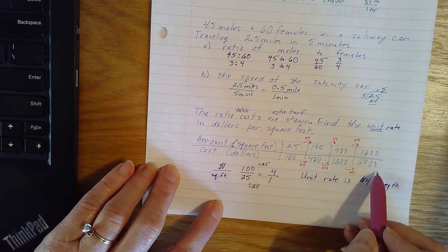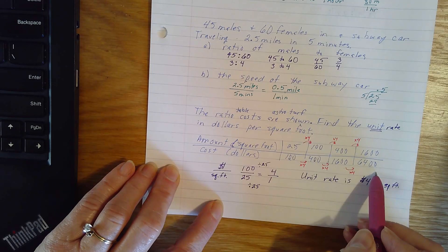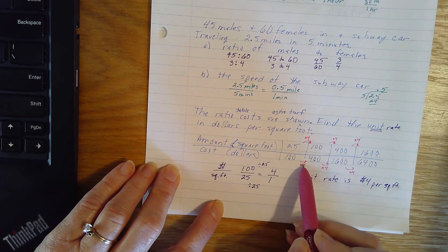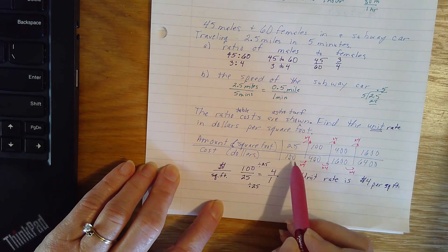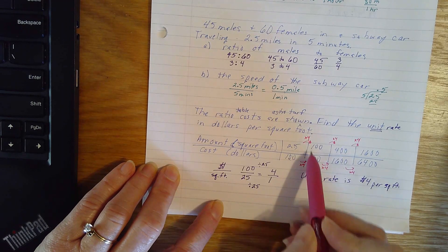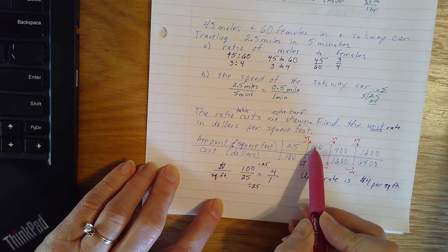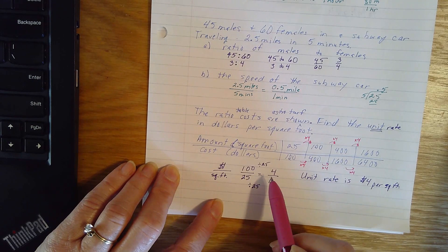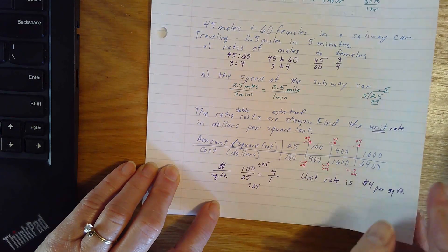So we could multiply it by 4. I could have chosen any number I wanted to. I have to simply be consistent top and bottom. You can see that I added 300 this time and I added 75 this time. Addition does not work when we're talking about rates.